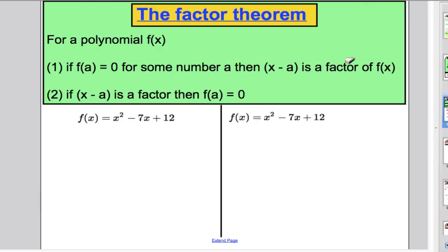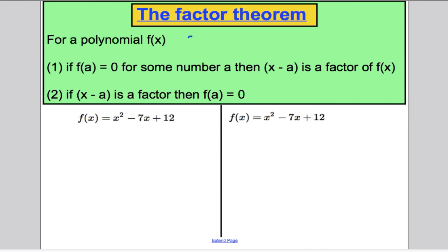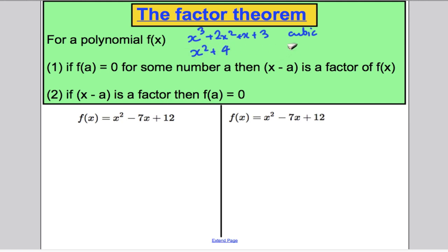The factor theorem says the following: if you take a polynomial — I might call it f of x — a polynomial is an expression that has powers of x in it. For example, x cubed plus 2x squared plus x plus 3 is a polynomial; it's a cubic because the highest power of x is x cubed. Something like x squared plus 4 is also a polynomial — its highest power is 2, so it's a quadratic. Those are examples of polynomials.